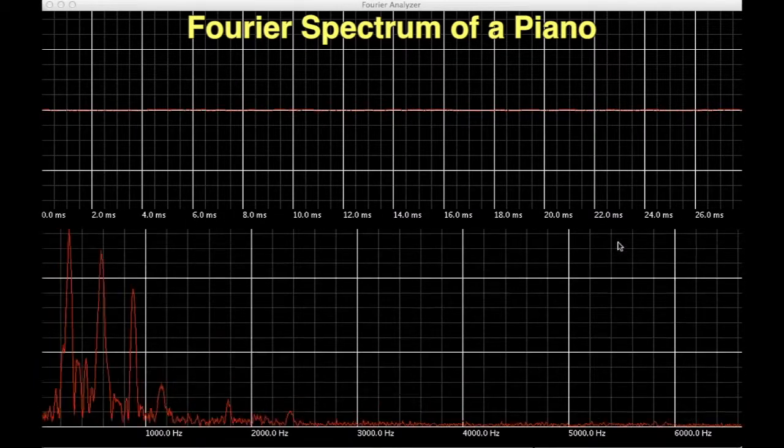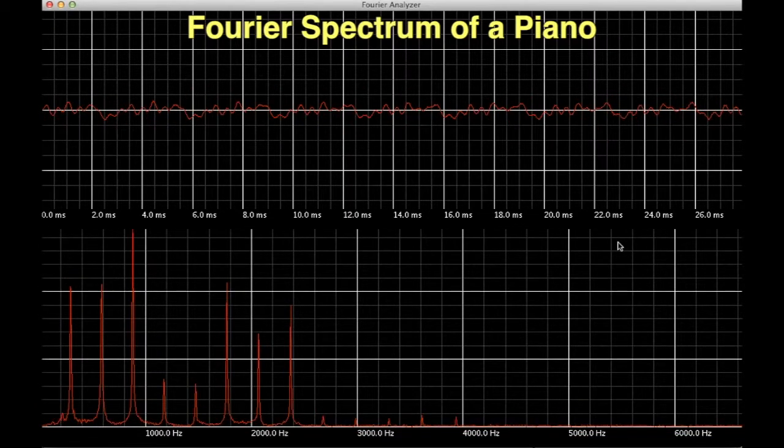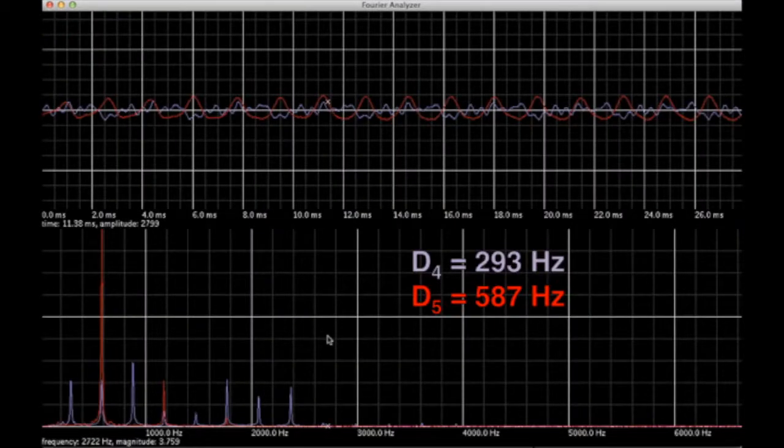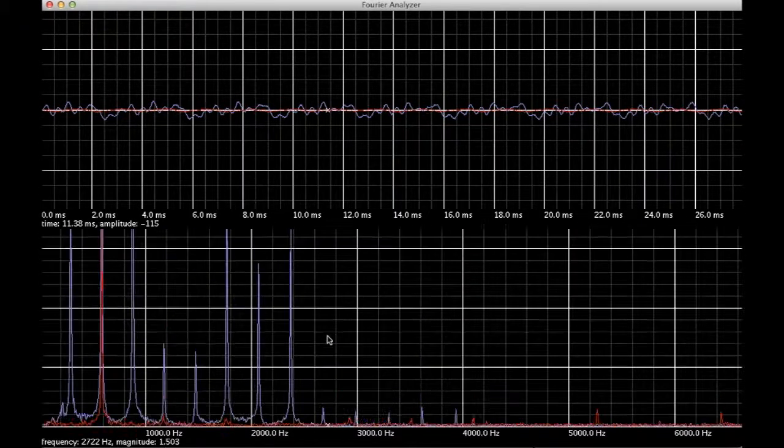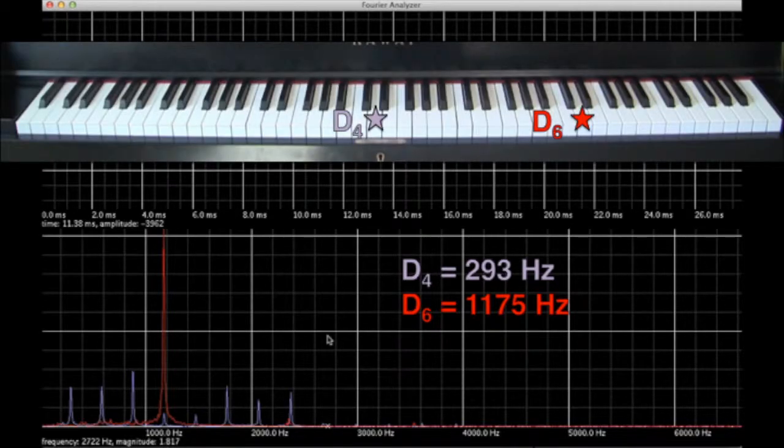We can also take a look at the Fourier spectrum of the piano. As we go up an octave, the Fourier spectrum changes. For D4, we get all multiples of 293 Hz, while for D5, we get multiples of 587 Hz, which is 2 times the frequency of D4. When we play D6, which is 4 times D4, the strongest peak in the Fourier spectrum is at 1175 Hz, or 4 times D4.